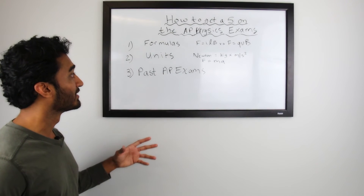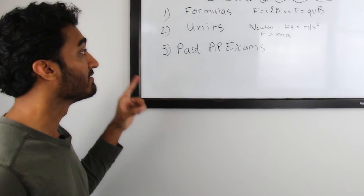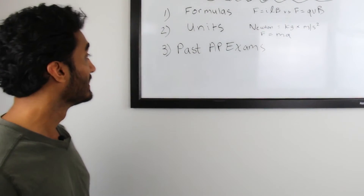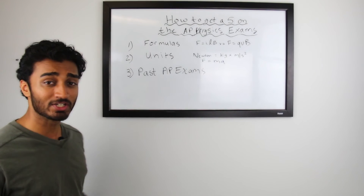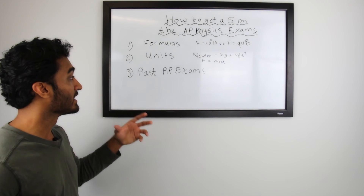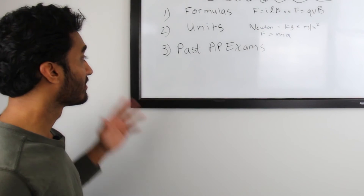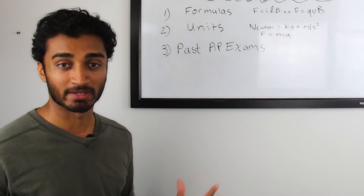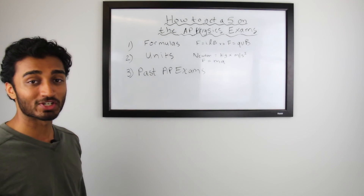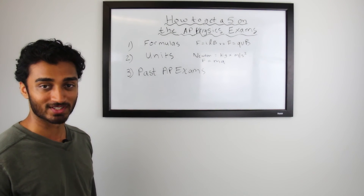And there you guys have it — three simple tips on how to get a five on the AP Physics exams. Tip number one: be very comfortable and familiar with all the different formulas on the exams. Tip number two: constantly check your units and use them to determine which formula you need to use on a specific problem. Tip number three: go through past AP exams, diagnose your weaknesses, and focus on the problems that are giving you trouble. For more information on how to get a five on the AP Physics exams, please visit preppedandpolished.com.